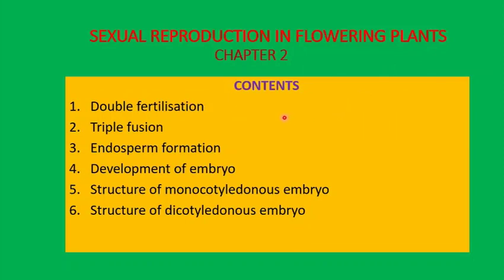Let's summarize what we have learnt today. We studied double fertilization followed by triple fusion, then the formation of endosperm, then the development of embryo. We learnt two types of embryos — the structure of the monocotyledonous embryo and the structure of the dicotyledonous embryo.